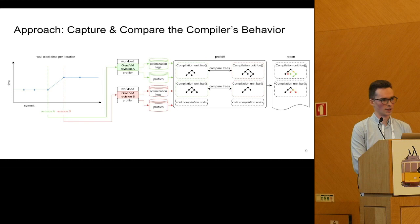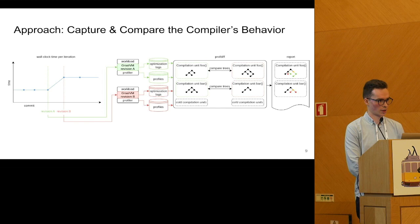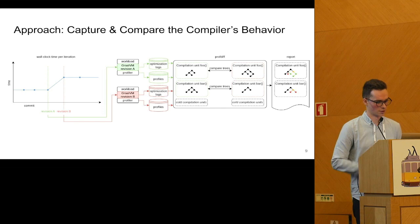Then we made a tool called profdiff that loads these logs and profiles, and for the frequently executed compilation units it compares the trees semantically. The result is a textual report that shows the differences between the trees, and a compiler engineer can read these reports and figure out what is the issue.